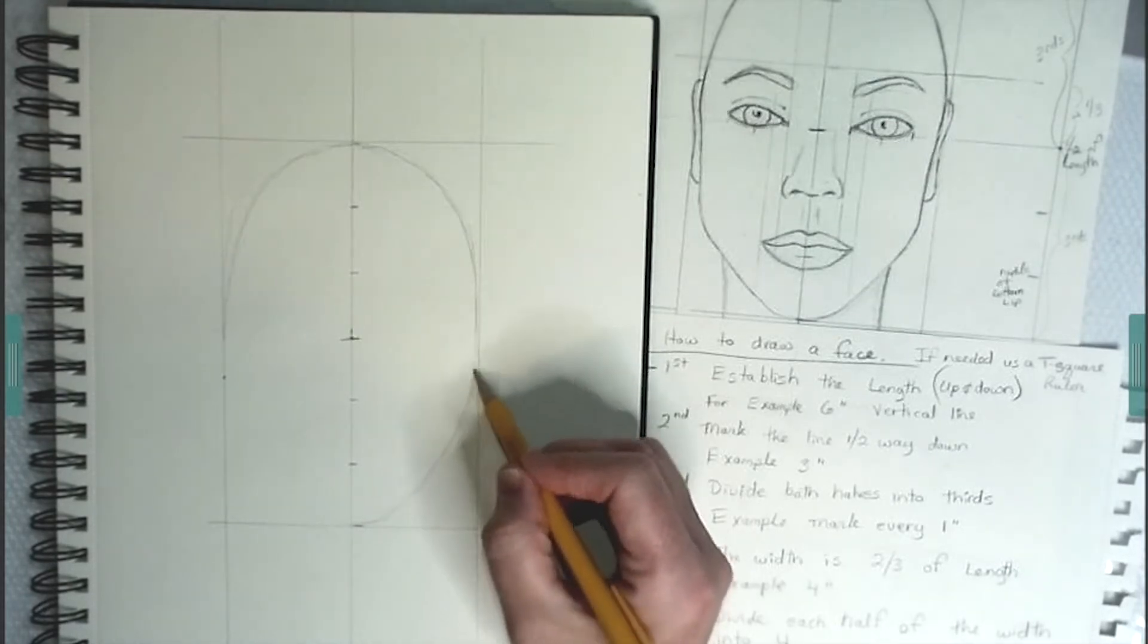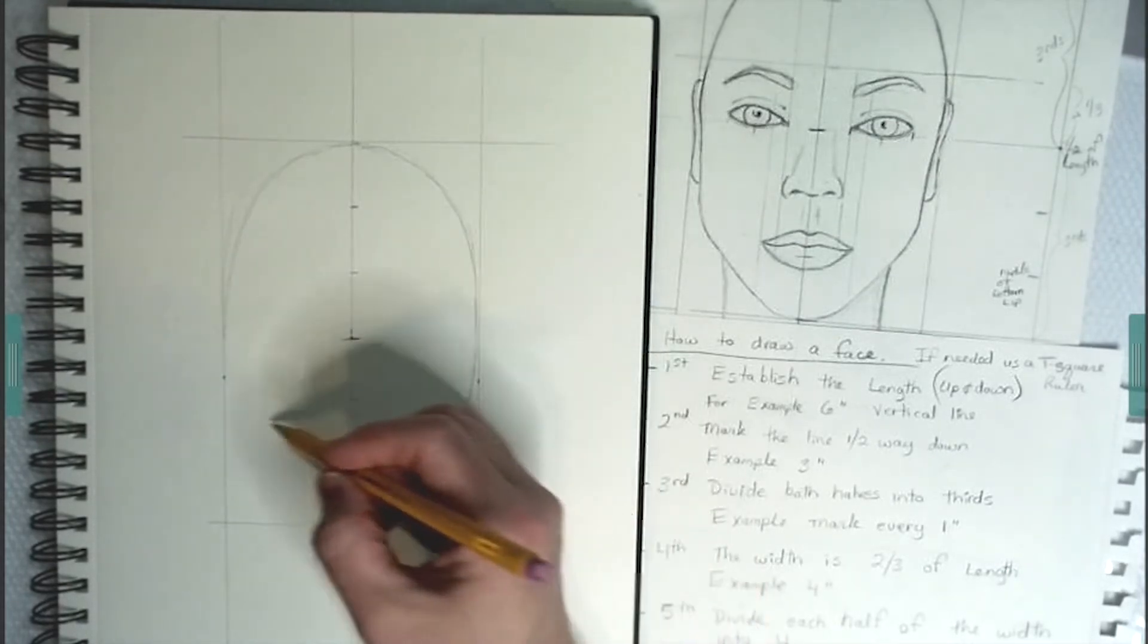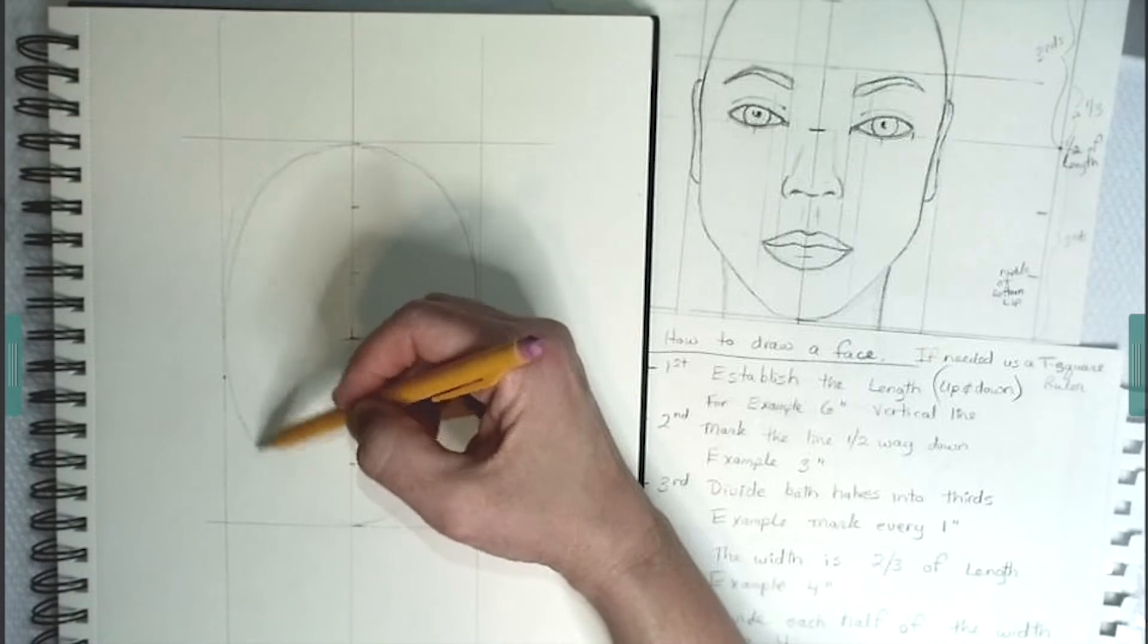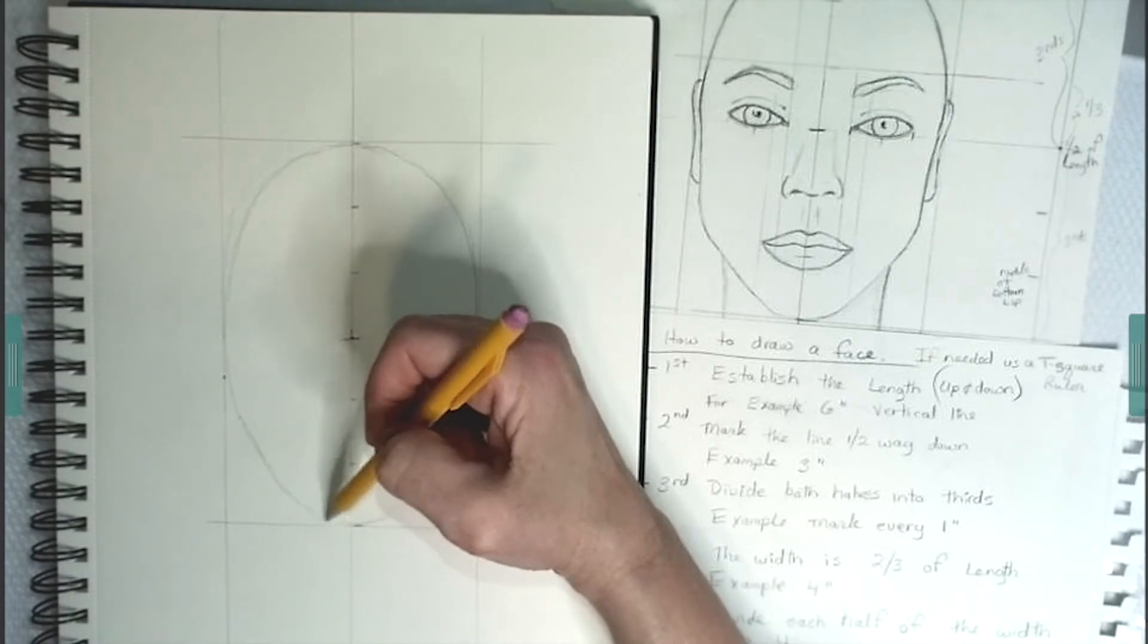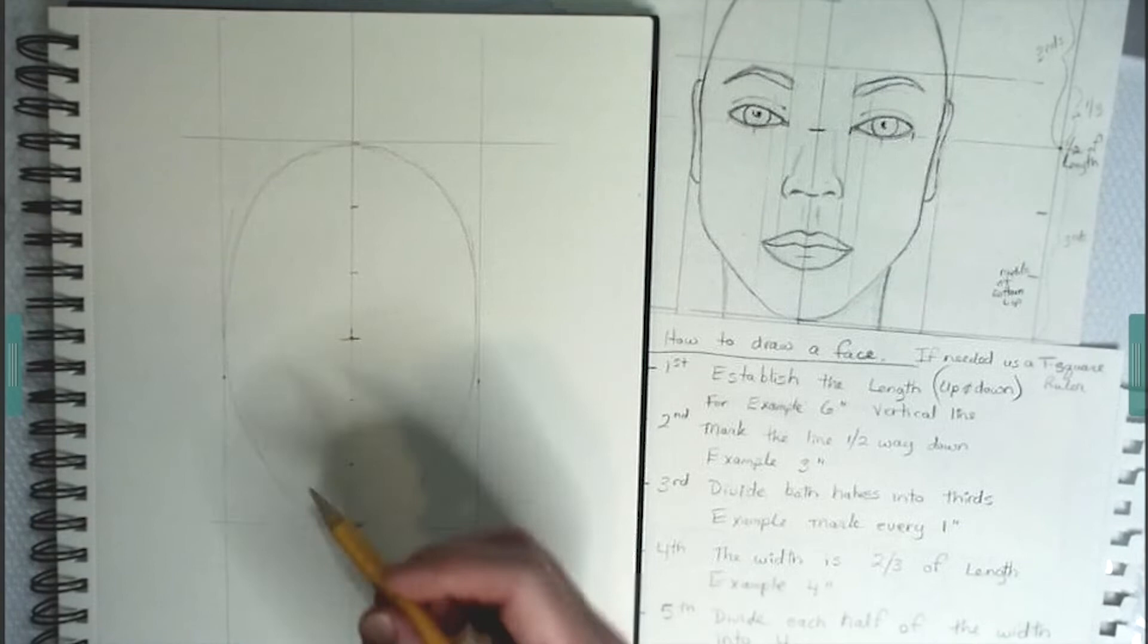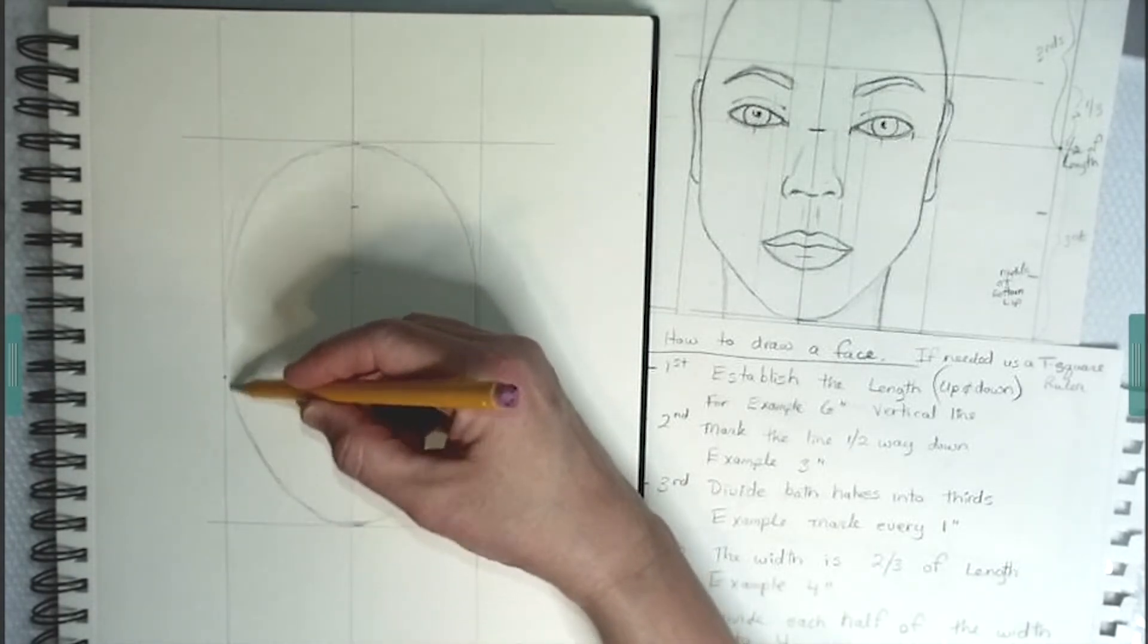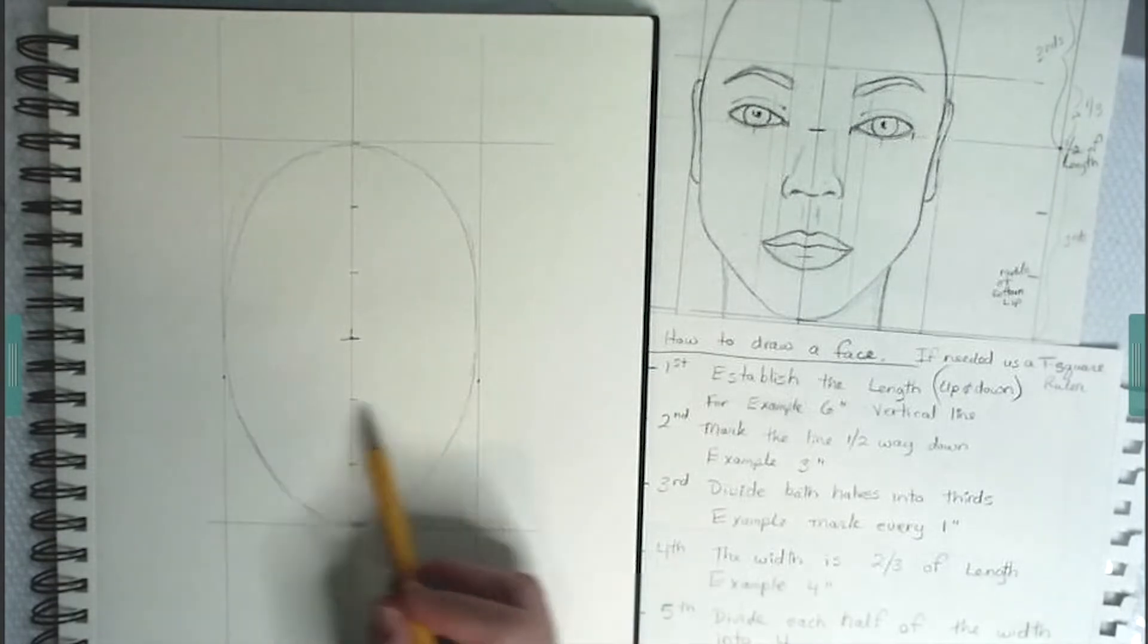The top part of the oval has a much deeper curve. For the lower part, for the chin, I like to make a sharper curve. Again, you're drawing very lightly. Have an eraser handy because you will be erasing a lot.